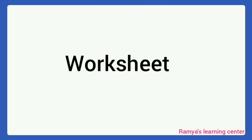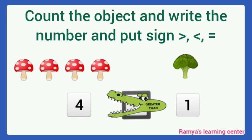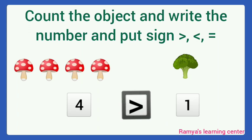Next, worksheet. Count the objects and write the number and put the sign: greater than, less than, or equal to. How many mushrooms are here? 1, 2, 3, 4. How many broccoli are here? 1. Here, 4 is the bigger number. Alligator opens mouth towards 4. So, 4 is greater than 1.